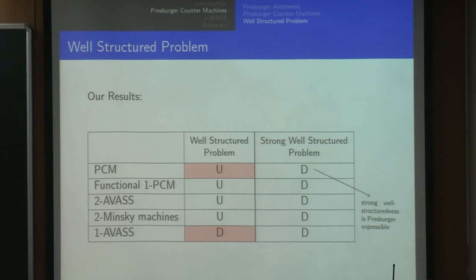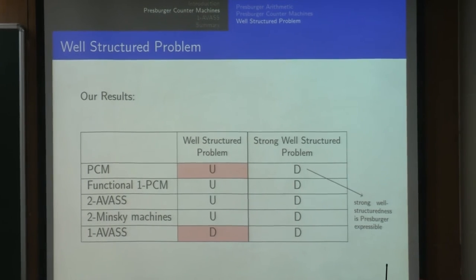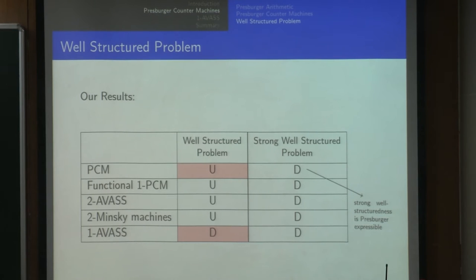The strong well-structured problem is decidable for all classes because strong well-structuredness is a local property. Whether a one-step transition exists implies another one-step transition, and that is Pressburger expressible. So we can check validity of that formula and decide it for all classes. The well-structured problem, on the other hand, is quite hard.